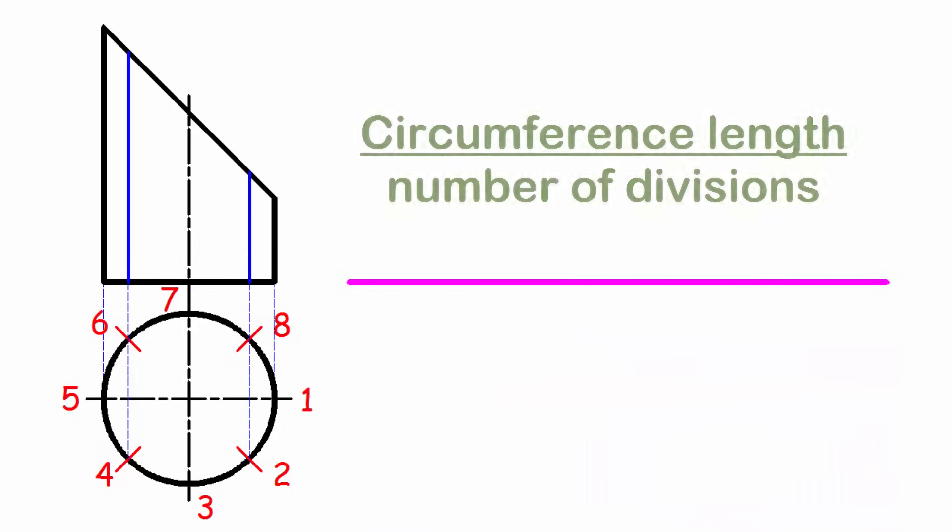The length of the circumference is divided into the same number of parts that we have divided the plant. In my case I will divide the length by 8 and we also number the marks. Remember that the first and last should always be the same.